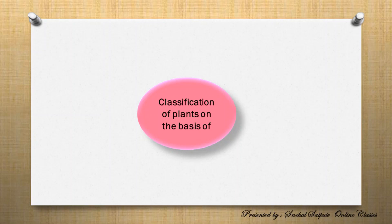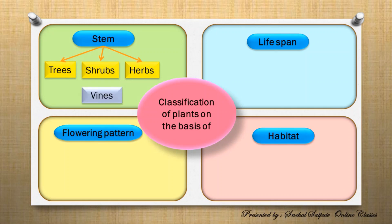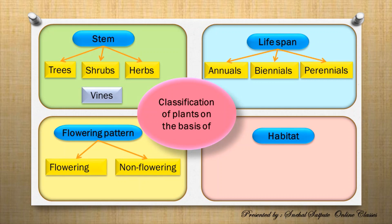So today, we have classified plants into four groups on the basis of size of stem, lifespan, their flowering pattern, and habitats. According to size, plants are classified into trees, shrubs, and herbs. We also studied about vines. Based on lifespan, plants are classified as annuals, biennials, and perennials. Based on flowering pattern, plants are classified into flowering plants and non-flowering plants. Based on habitats, plants are divided into terrestrial plants, which include xerophytes, and aquatic plants or hydrophytes, which include submerged plants.